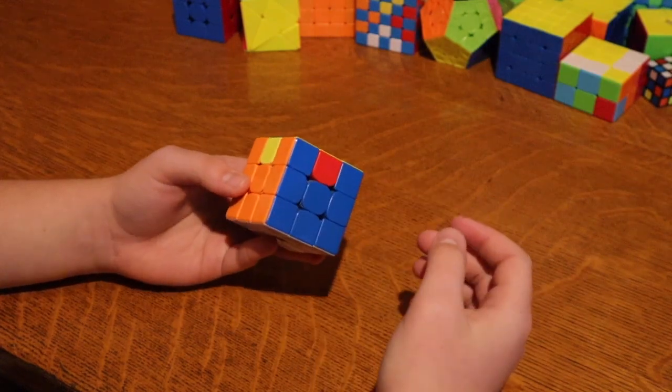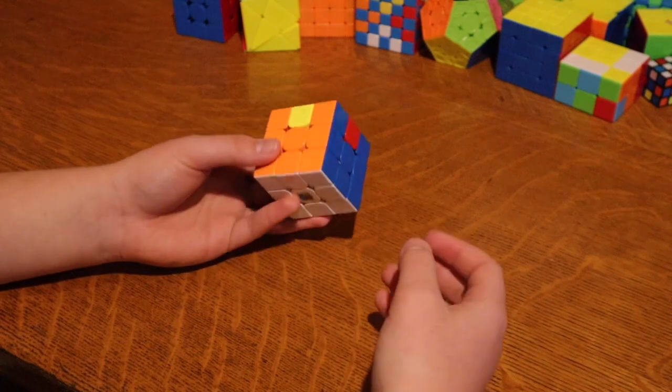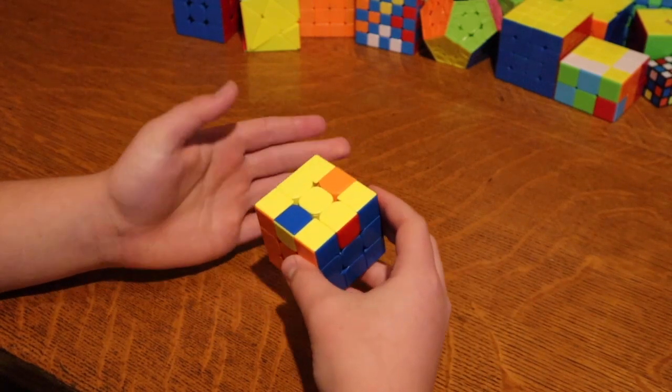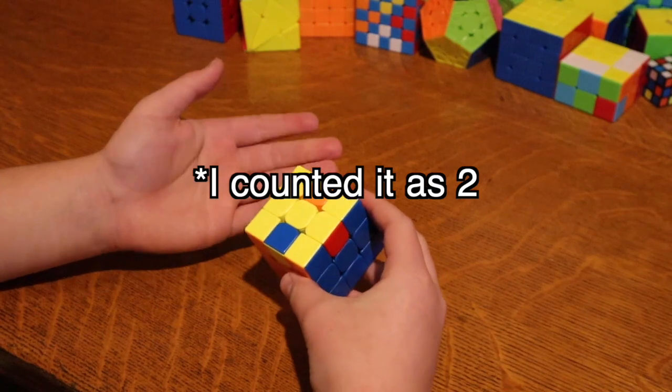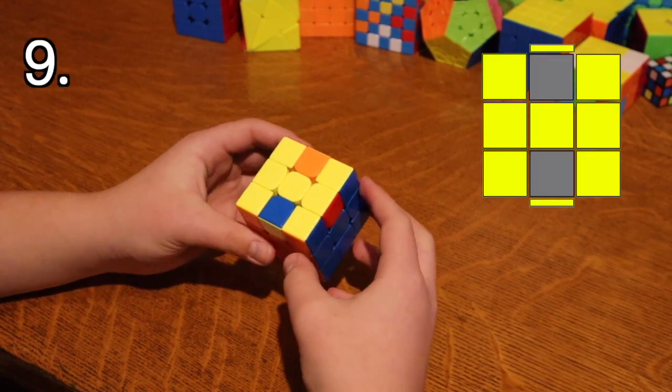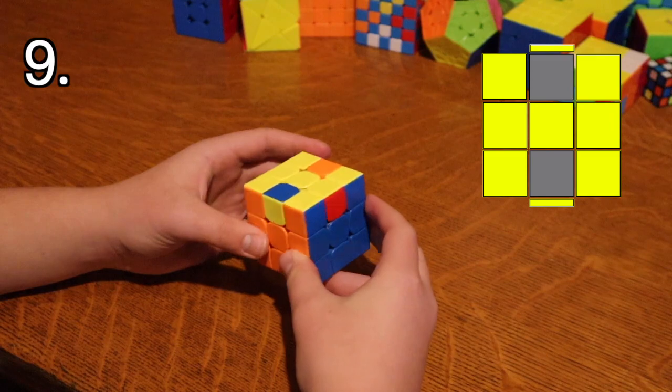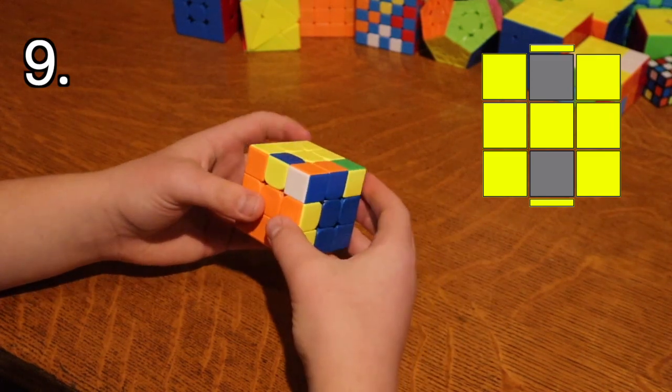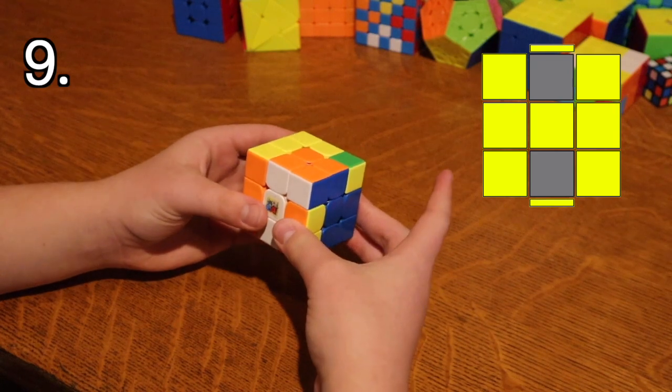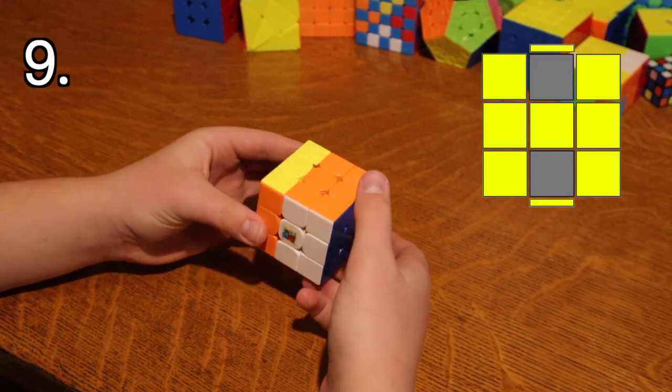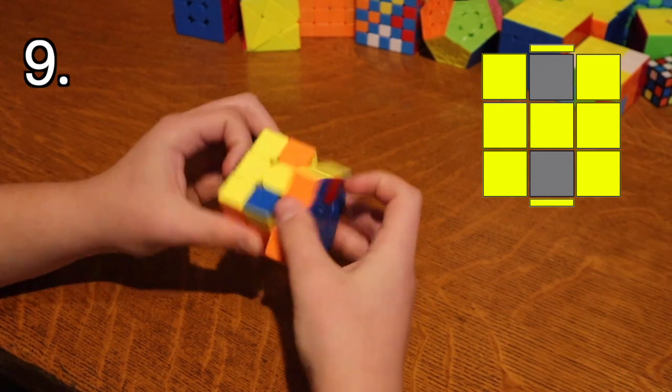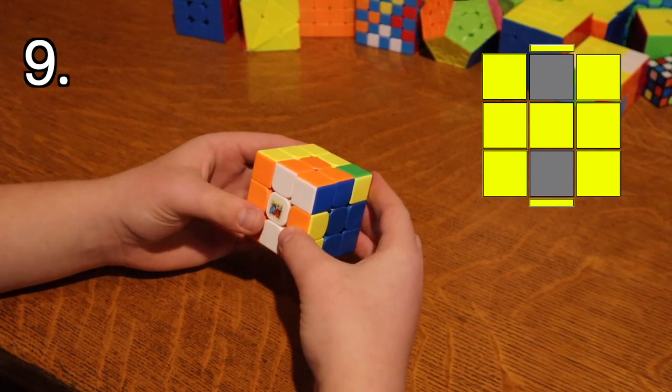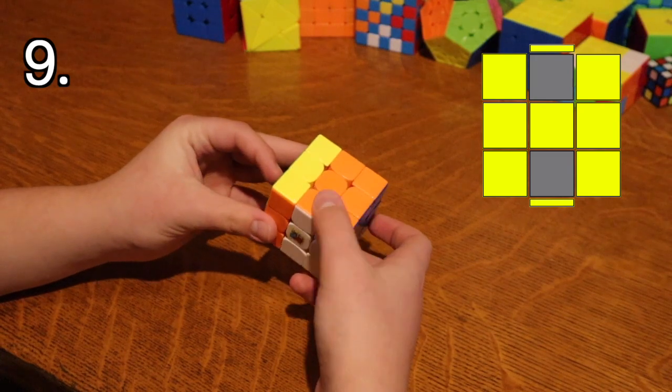So the last one is actually two cases, but only the first one is really easy for some reason. So I'm only counting it as one, but I will show you the second one. They're the two cases where only edges are unsolved. So this one looks like an H. It's pretty easy because it's just a sexy move, and then M prime, and then a reverse sexy move with an R wide at the end. So to show you again, sexy move, M prime, reverse sexy move, wide R prime.